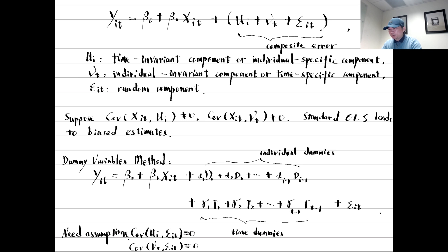The individual-invariant component captures the time-varying factors, such as government policy or economic environment, that change over time but affect all individuals the same way. It is also called the time-fixed effect.